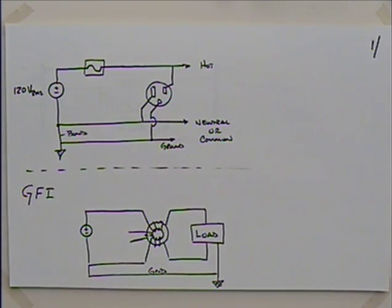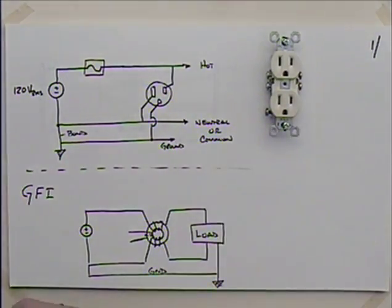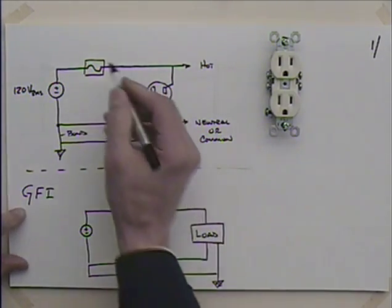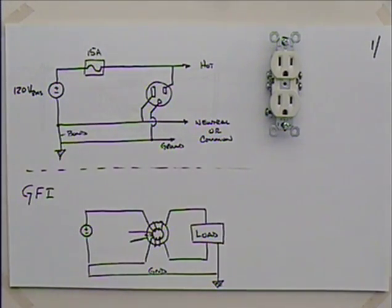Okay, so we've looked at a simple circuit, a plug-in. I've got a visual aid right there. And if this is, let's say, a 15-amp circuit, we would have 15 amps here. It's probably either 15 or 20, depending on the shape of the plug-in.